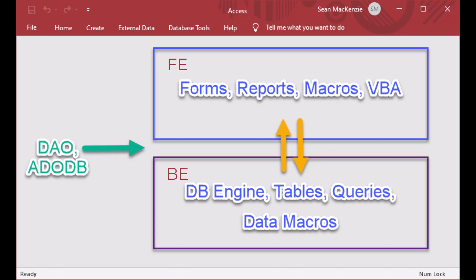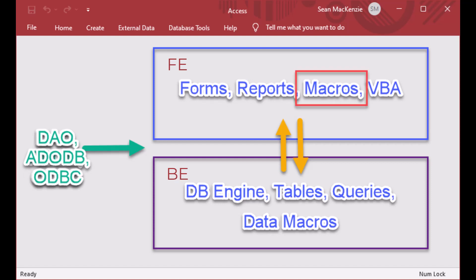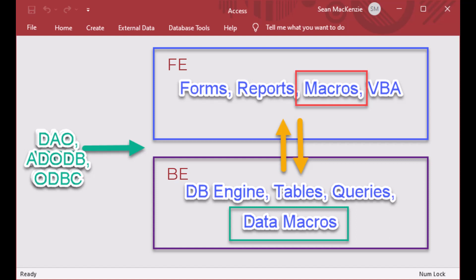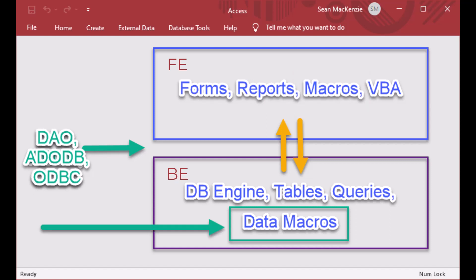The whole thing is tied together by DAO, ADODB, or ODBC. But the macros you see on the front-end are not the same as the macros on the back-end, because those are tightly integrated with the ACE database engine. That's exactly what we're going to talk about today — data macros, which are similar to triggers you would find on other database systems.